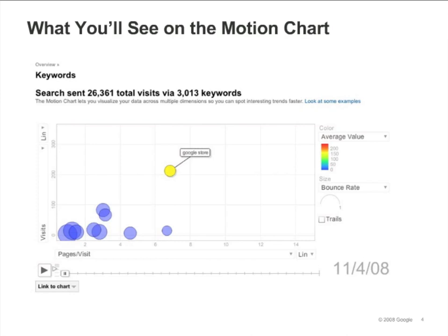For example, if you click Visualize on a keyword report, each dot will be a keyword. You can mouse over each dot to see its label, and by clicking it, you can make the label stay visible, as we've done here for the keyword Google Store.